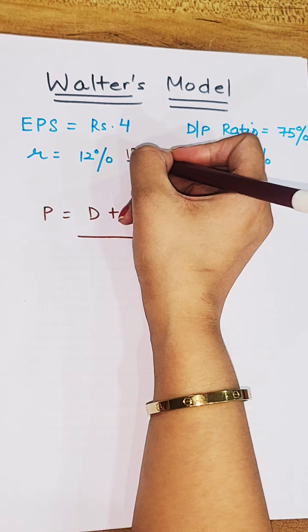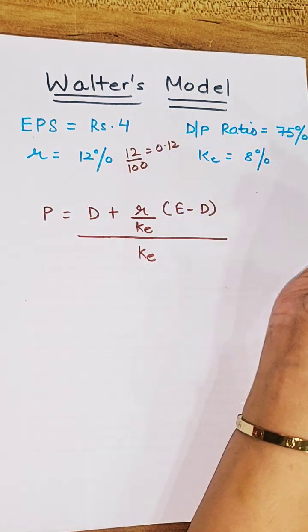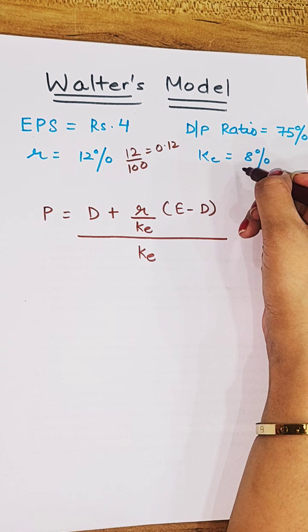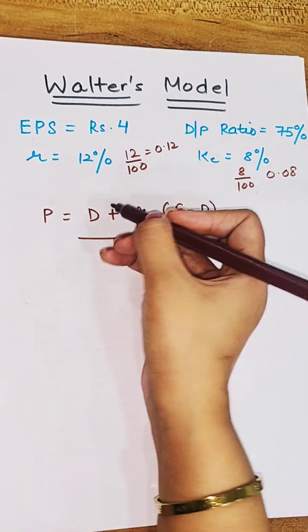So 12% since R is, we can write 12 by 100 or we can say 0.12. Similarly KE 8%, we can write 0.08.